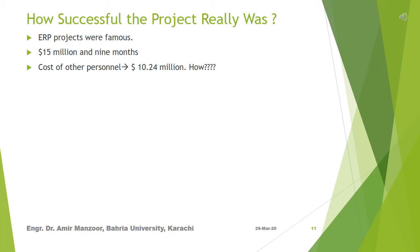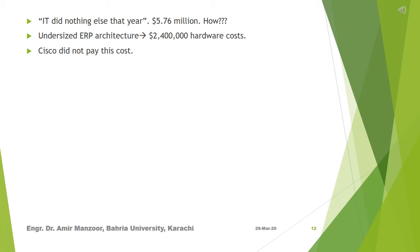The original $15 million included only costs for the estimated 20 Cisco people that made up the core team. Other personnel were pulled into the project — approximately 100 total — but their costs do not appear to be factored into the total project cost. The cost of this additional manpower was $10.24 million. I would like you to go through the case and find out how the cost of additional manpower was $10.24 million. Further note that toward the end of the summer, the IT department postponed all their projects and focused entirely on the ERP project. Solvik says IT did nothing else that year, and these costs were not included in the original $15 million.